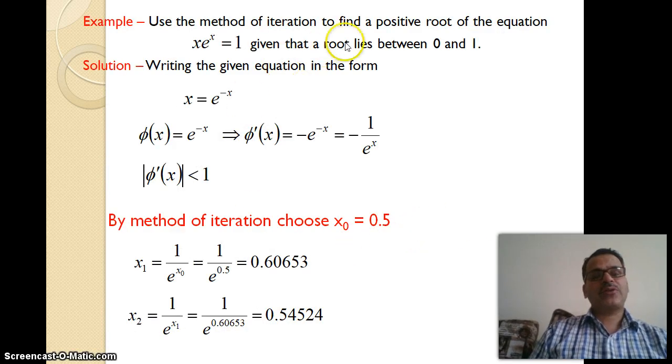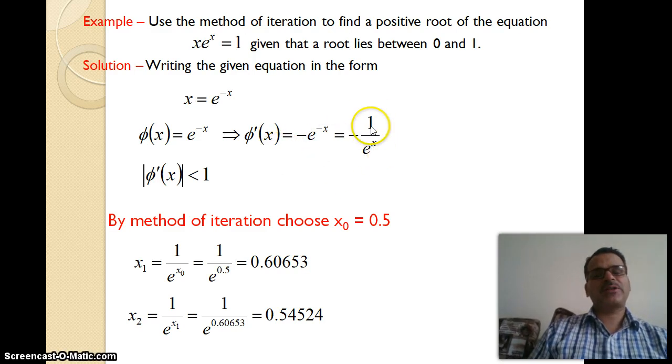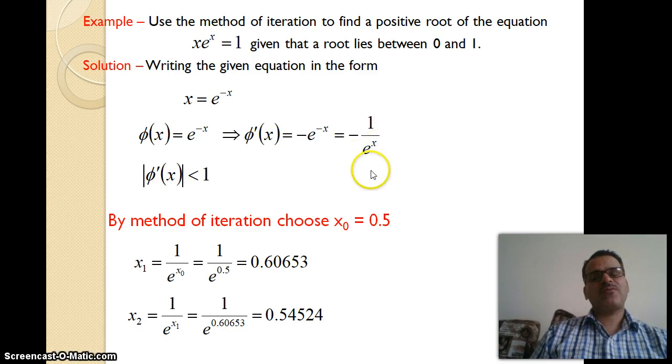Consider an example: Use the method of iteration to find a positive root of the equation xe^x = 1, given that the root lies between 0 and 1. We can write x in the form x = 1/e^x = e^(-x). We take the φ(x) function as e^(-x). The derivative φ'(x) = -e^(-x) = -1/e^x. To check convergence, |φ'(x)| = 1/e^x.